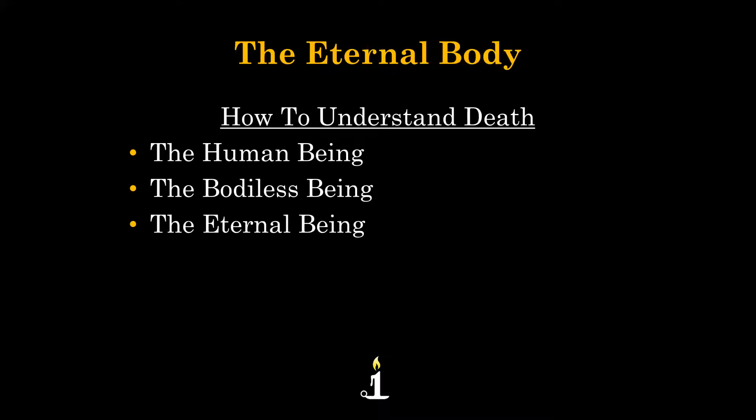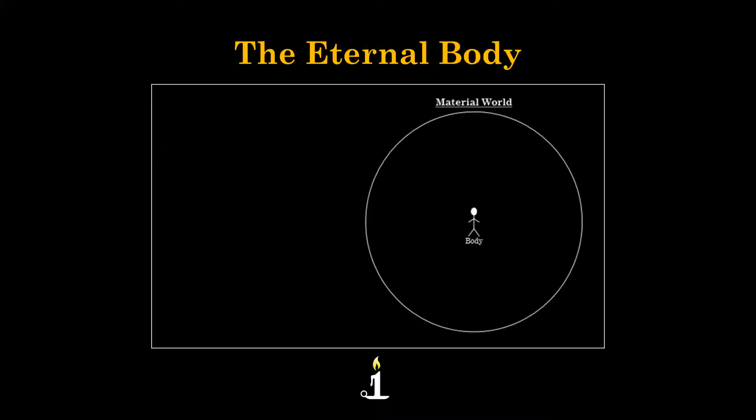Let's start with the human being. Because to understand how death affects us, we first must understand us. So the human being has two primary parts. That is the material body, which lives in the material world, and the soul, which lives in the spiritual world. And this is why we call ourselves human beings. We have a spiritual being, a soul, and we have material humanity. We're a human being.